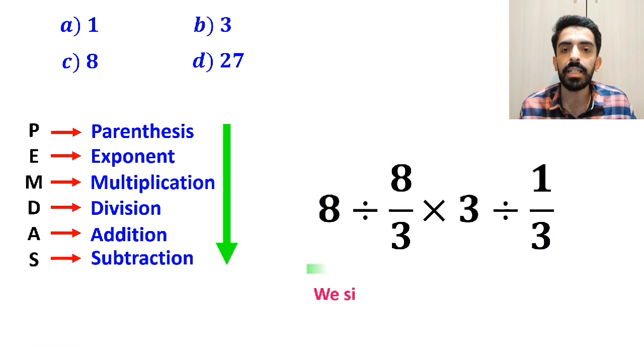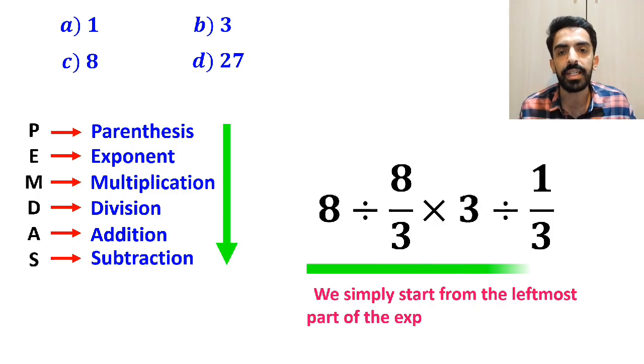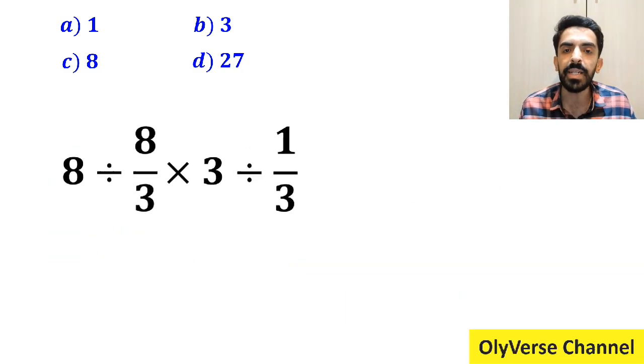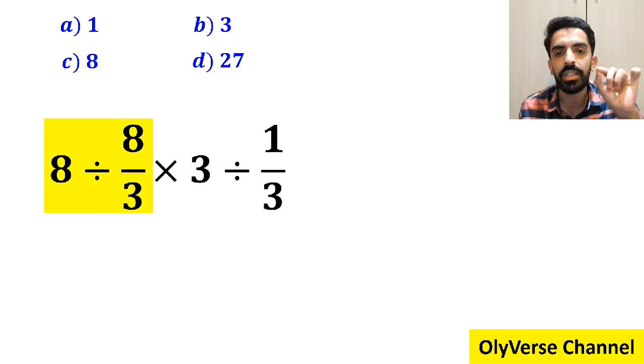So in this case, we simply start from the leftmost part of the expression and continue step by step toward the right. It means that we begin with the expression 8 divided by 8 over 3, which I have marked in yellow.